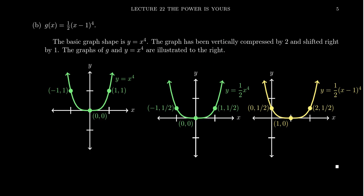Let's look at an example where we're going to do some even transformations. Let's take g of x to be one half times x minus one to the fourth power. We have to find first a basic function. Our basic function is going to be the monomial y equals x to the fourth, which will have the basic bucket shape. It'll be smooth, steeper than a standard parabola.